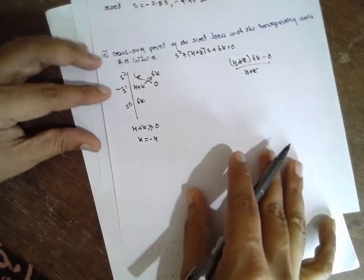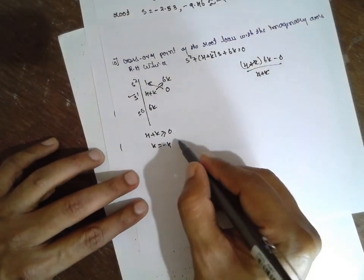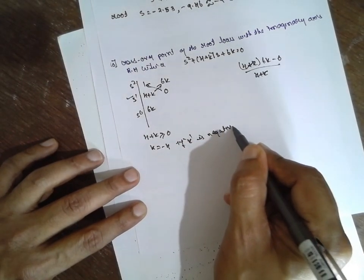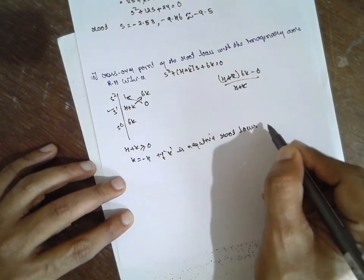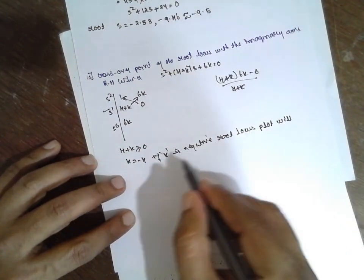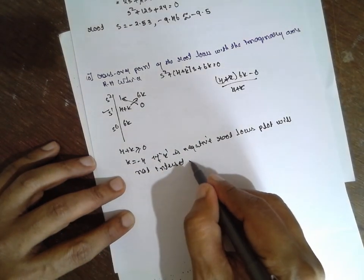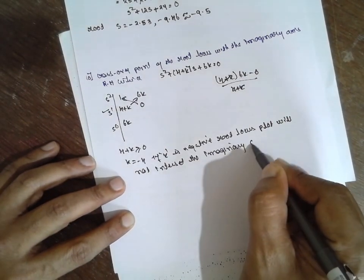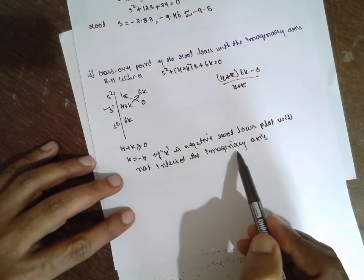Now find out k term: 4 plus k is greater than or equal to 0, therefore k is greater than or equal to minus 4. If k is minus 4, if k is negative, the root locus plot will not intersect the imaginary axis. This is the important point. If k is negative, the plot will never intersect with the imaginary axis.